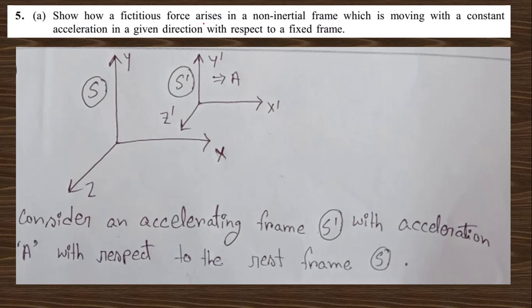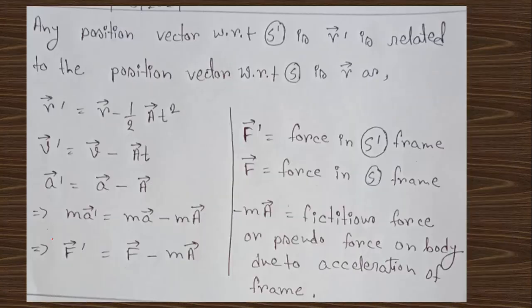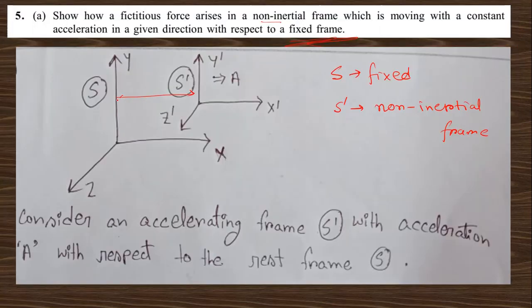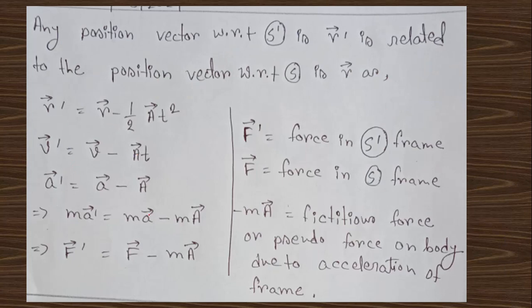Question 5a: Show that fictitious force arises in a non-inertial frame moving with constant acceleration. Taking S as the fixed frame and S′ as the non-inertial frame accelerating with acceleration a⃗, the position transforms as r⃗′ = r⃗ − (1/2)at². Differentiating twice, the force in S′ is F⃗′ = F⃗ − ma⃗, where −ma⃗ is the additional term arising from the frame's acceleration, known as the fictitious or pseudo force.